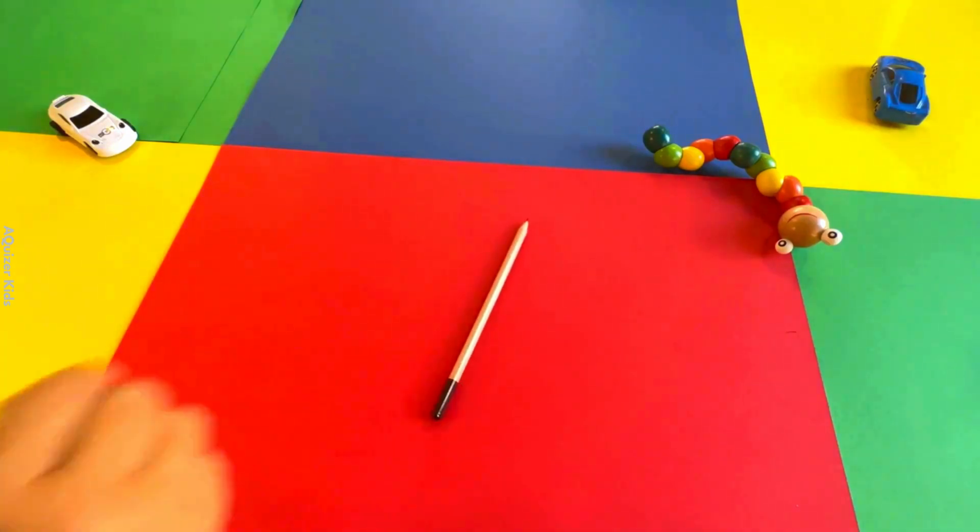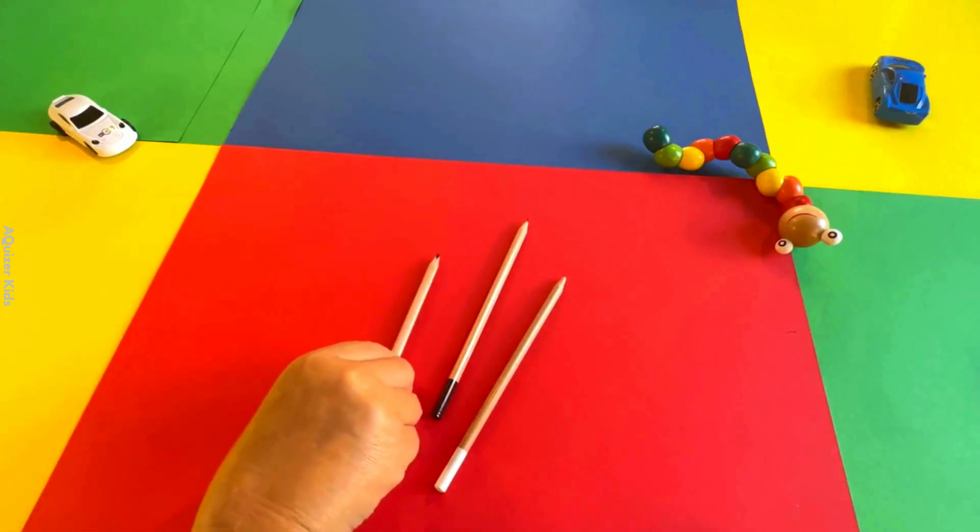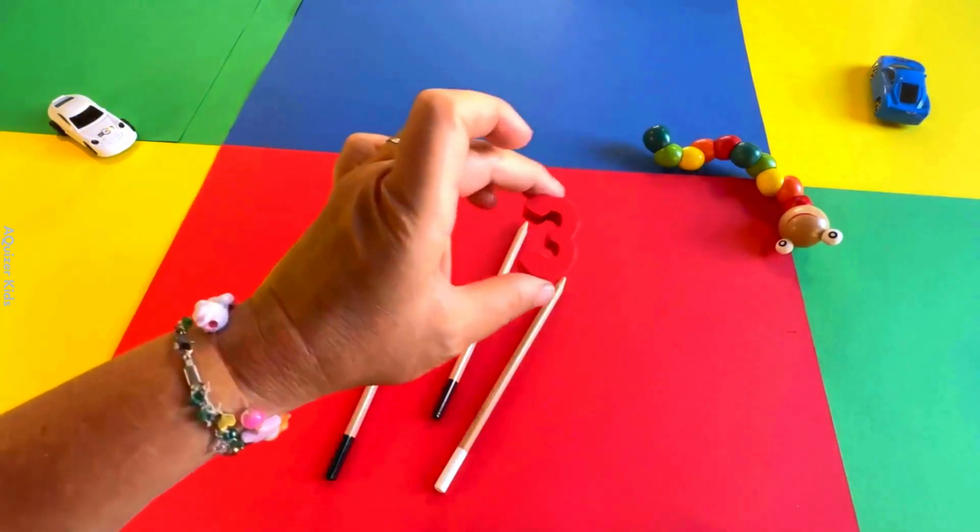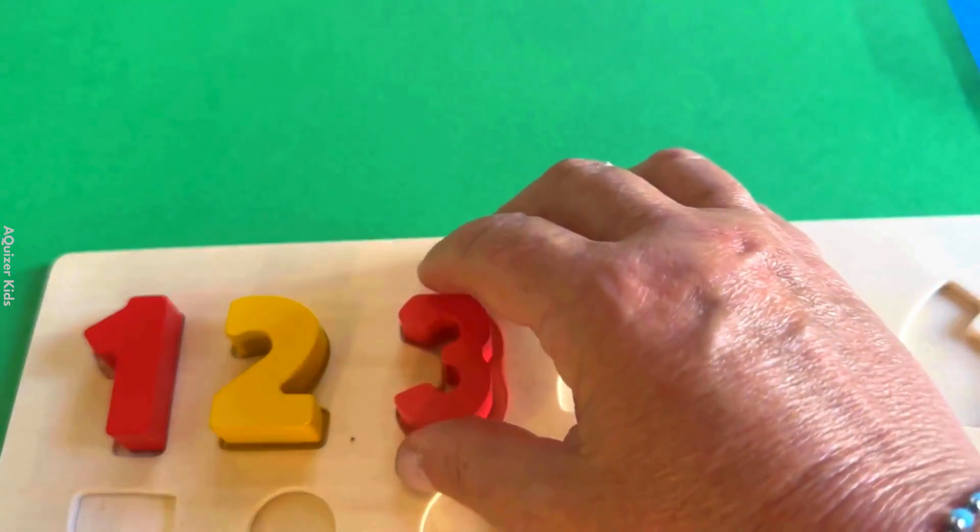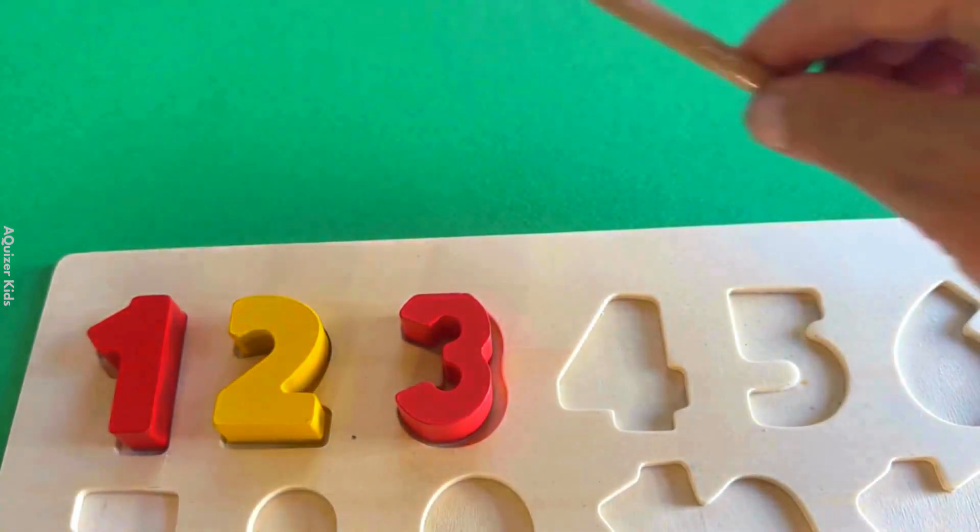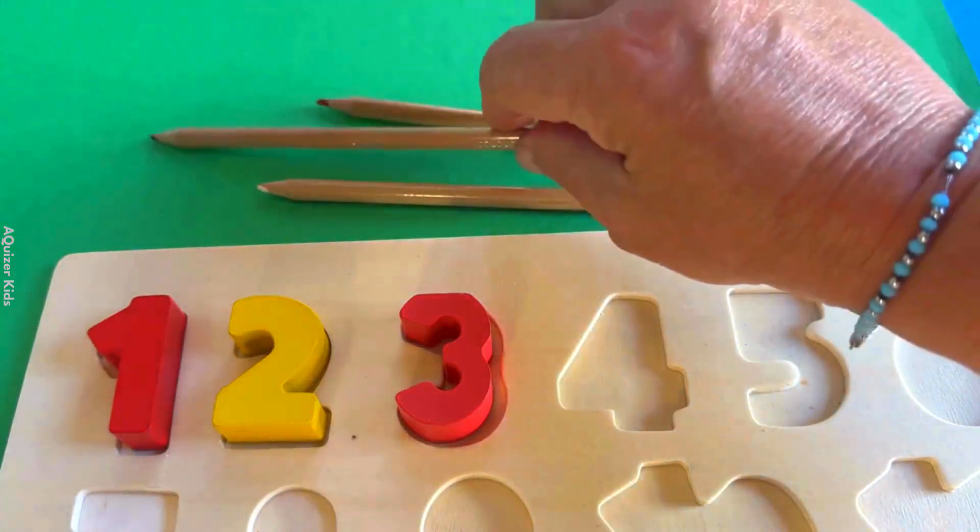Let's count the pencils. One, two, three. There are three pencils. This is number three. Let's put that in the puzzle. Number three. One pencil. Two pencils. Three pencils.